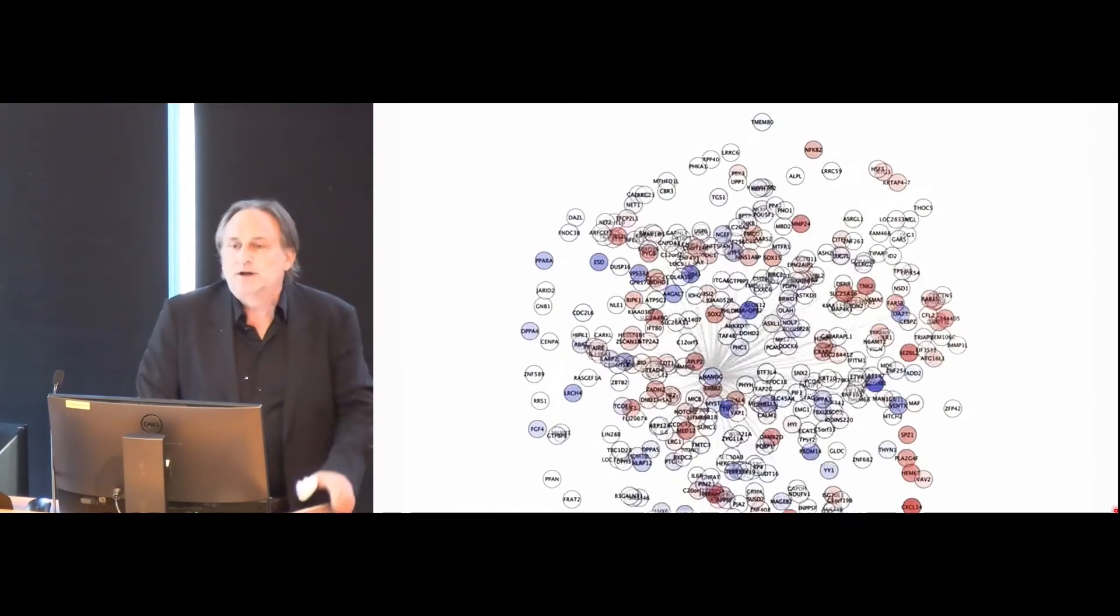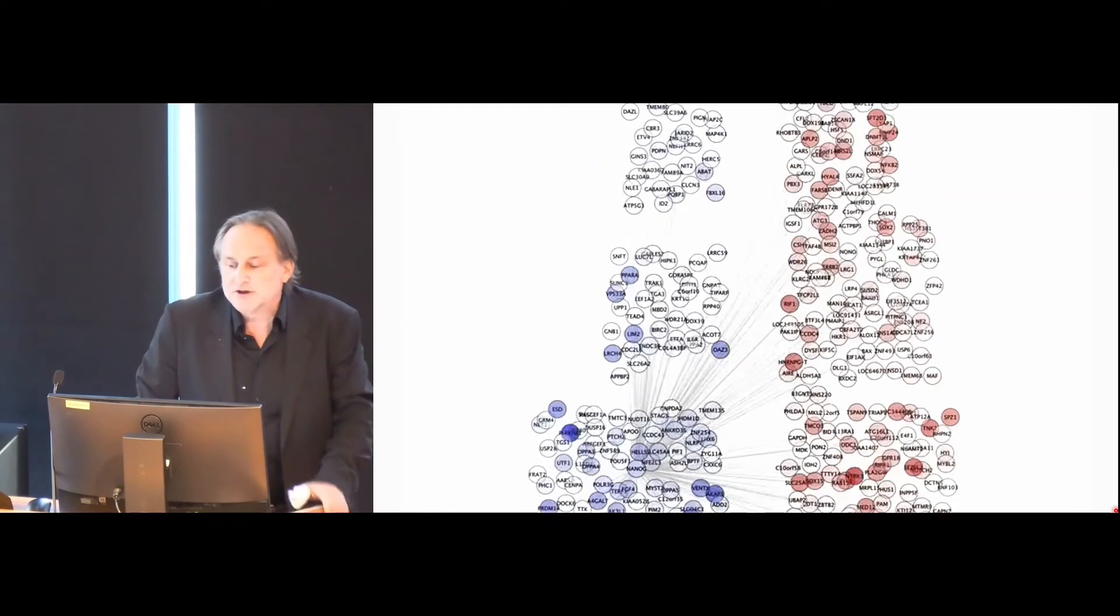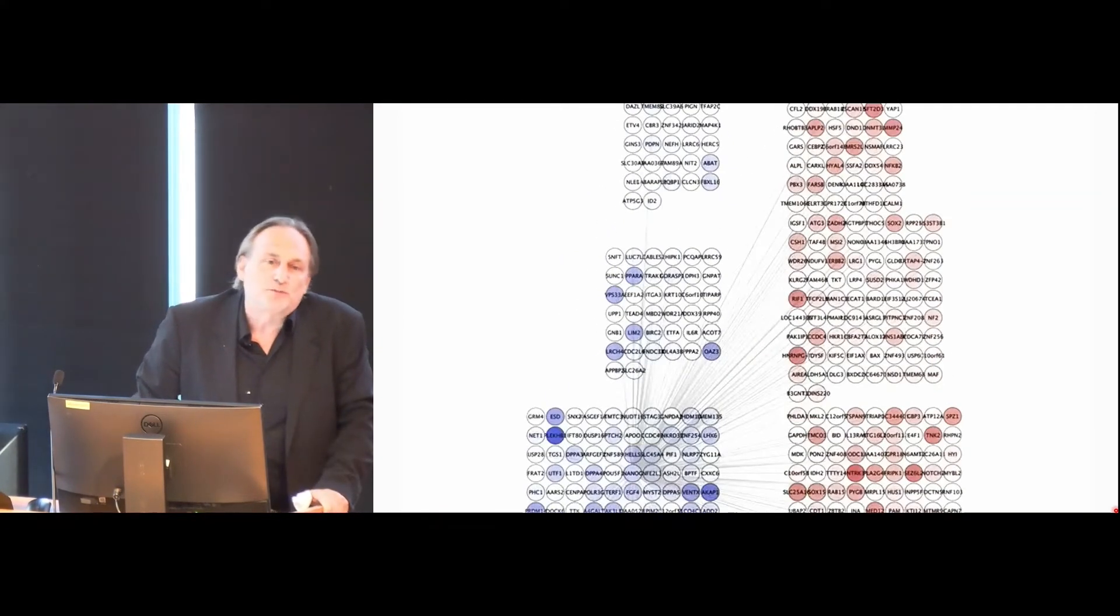The way things work in biology is actually very complicated. I'm just giving you an example of one particular protein called Nanog. This is one of the Yamanaka factors that we study in pluripotency. These are the targets that that particular protein regulates in just a particular type of cell, which is a pluripotent stem cell.